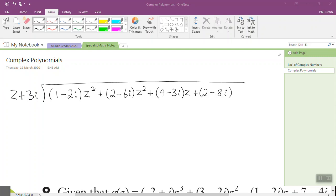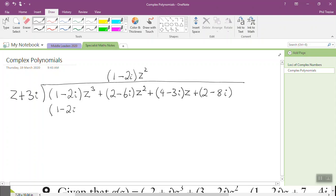This is a cubic or a third degree polynomial with complex coefficients. So we start by saying to ourselves, this first term here is a number by z-squared, z-cubed divided by z. This will be, when we divide, a number by z-squared. So I'll write this up here, 1 minus 2i z-squared. We multiply by both of the terms in the divisor, so 1 minus 2i z-cubed.